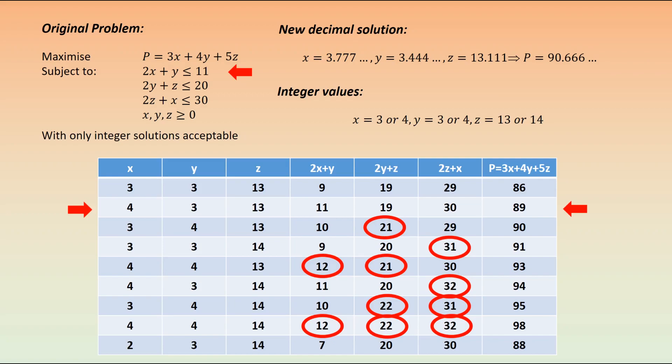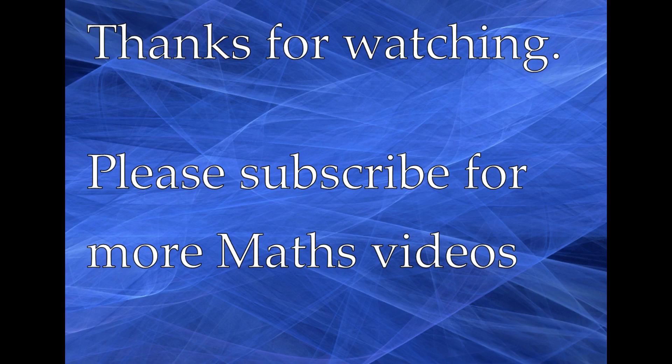So when working with integer values solutions, use simplex as per normal, find your solution, and then consider integer values around that point. You may need to be careful—if you're just doing it with two variables, it's pretty straightforward. Once you get three or more, you need to be very careful because the different combinations can lead to better values. However, it's pretty straightforward. Good luck with it. I hope it works out well.